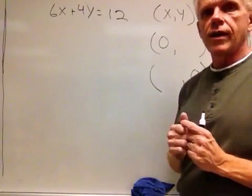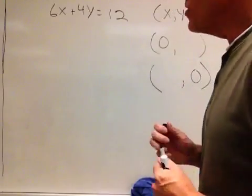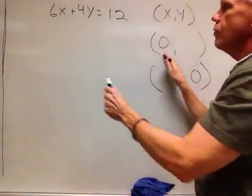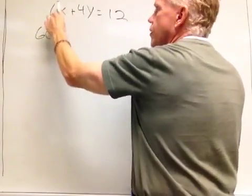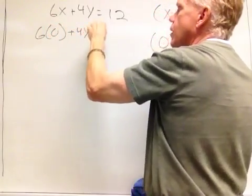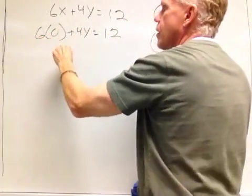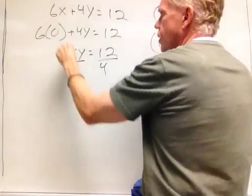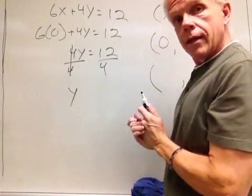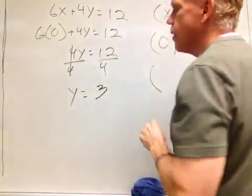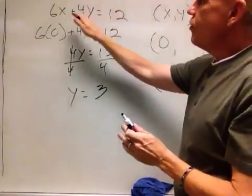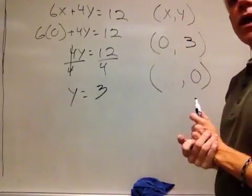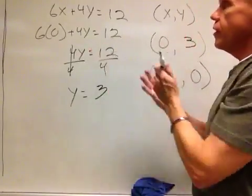Great, I hope you were able to work that out. Let's check your work. First, we let X equal zero, so six times zero plus four Y equals twelve. Six times zero is zero, so we have four Y equals twelve. Dividing both sides by four gives us Y equals three. So when X is zero, Y is three — the ordered pair zero comma three is one solution to this linear equation in two variables.